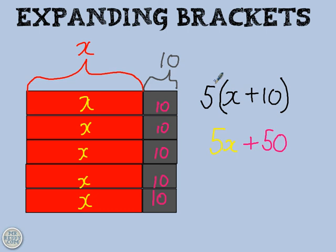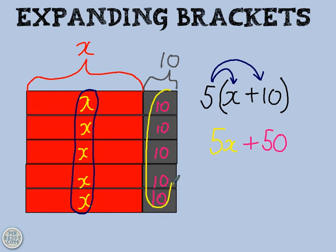And the way to do it would be to do 5 times that term and 5 times that term. Let's see where that comes from. 5 times the first one, 5 times x, comes from all of these. And then 5 times the second term gives you all of these, 50, 5 lots of 10.